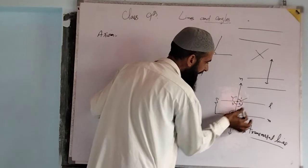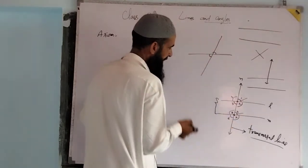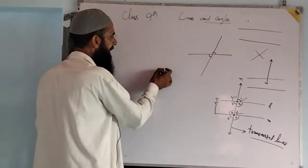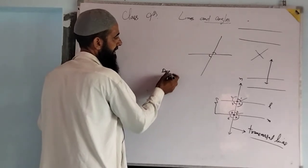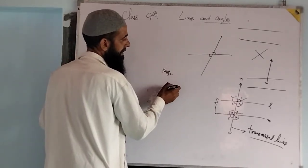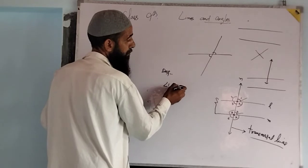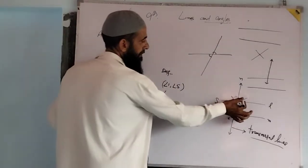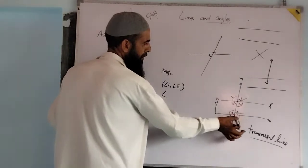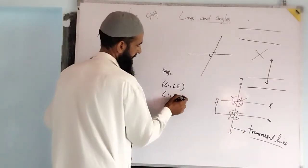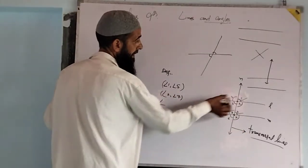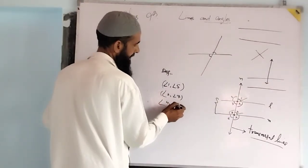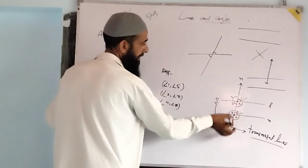Now here is an important section — remember this. The angle pairs formed are: angle 1 and angle 5, angle 2 and angle 7, angle 4 and angle 8, and angle 3 and angle 6.